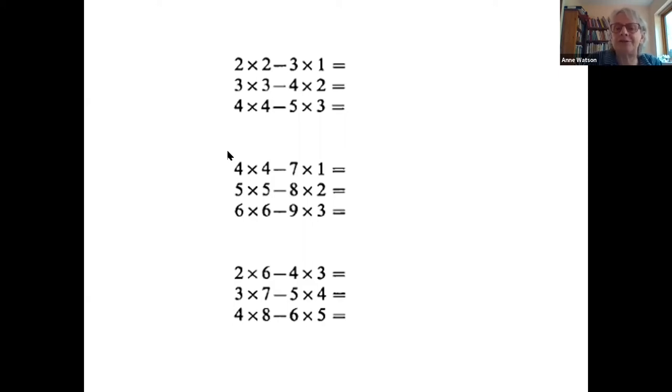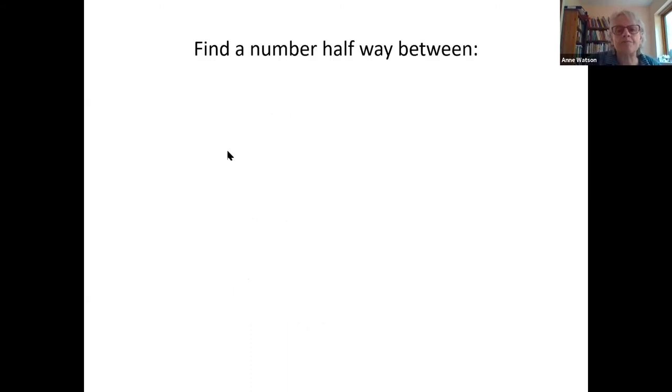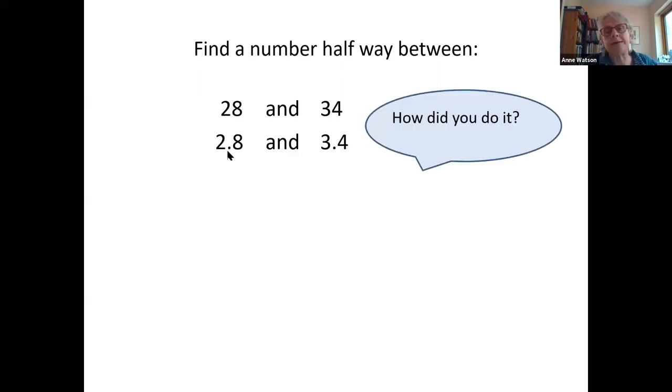This one is rather fun because first of all you can decide how it is you've found the number halfway between, because most of us however sophisticated we are will have some kind of idea of bouncing from the sides to the middle. That idea of bouncing from sides to middle isn't such an obvious thing to do when you get to the second example, but oh look, I don't have to do much to this. What is it that I have to do? Can I use the thing that I've just done in order to help me with this? And what's the generalization that I'm drawing on behind it?